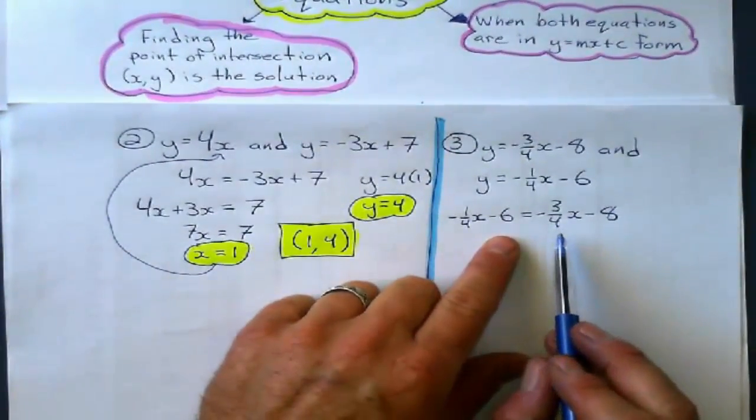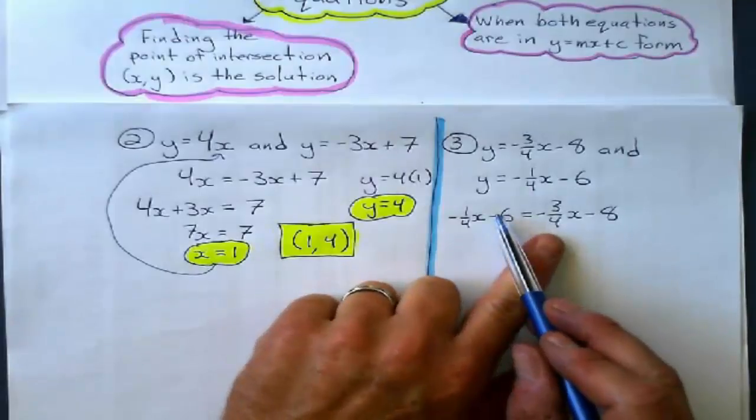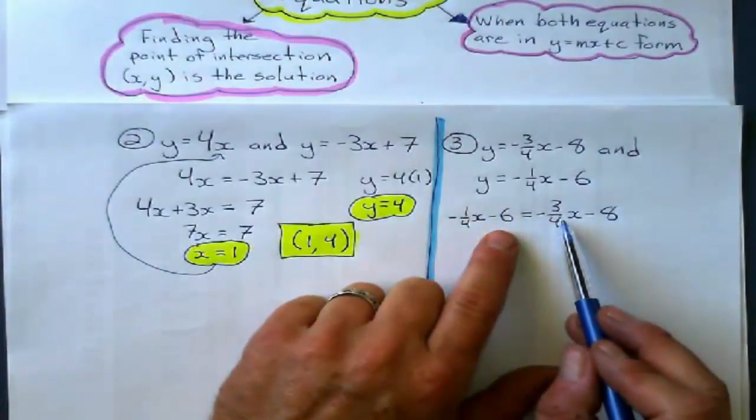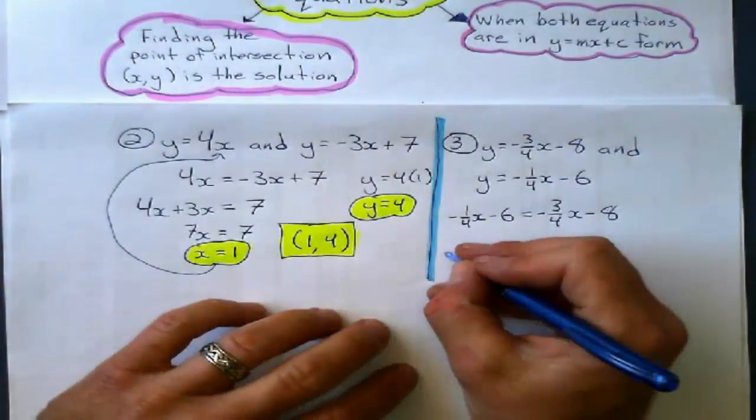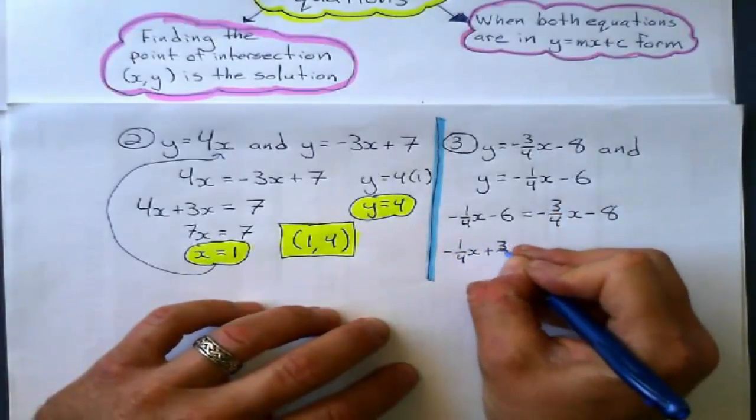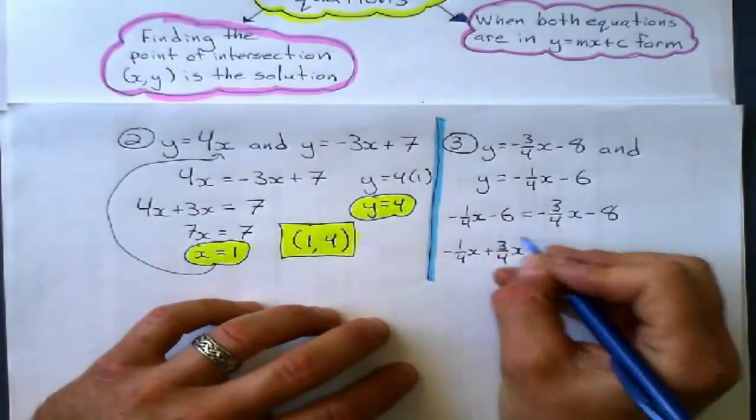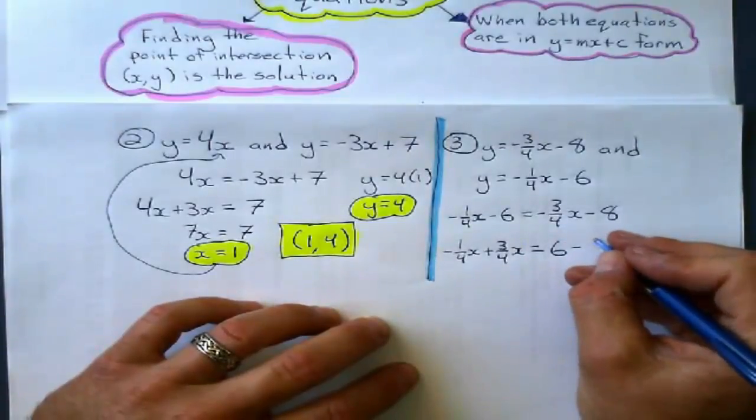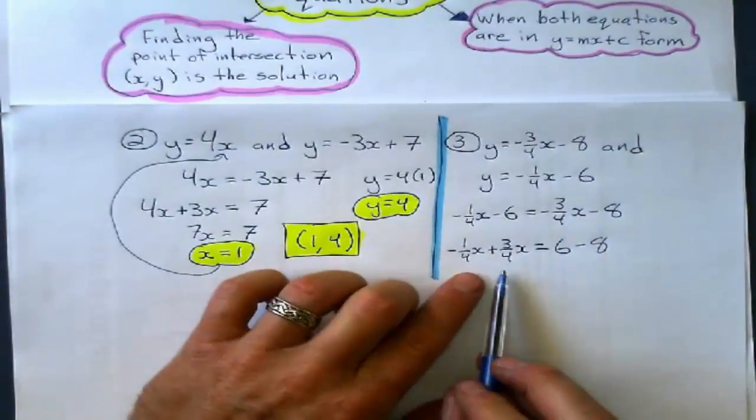Negative 3 quarters x minus 8. Now, I'm going to swap those two terms around, changing their signs. So, the negative 3 quarters x will become positive, and the negative 6 will become positive on the other side. Negative 1 quarter x plus 3 quarter x equals 6 minus 8. Is that right? Yes, that's right.